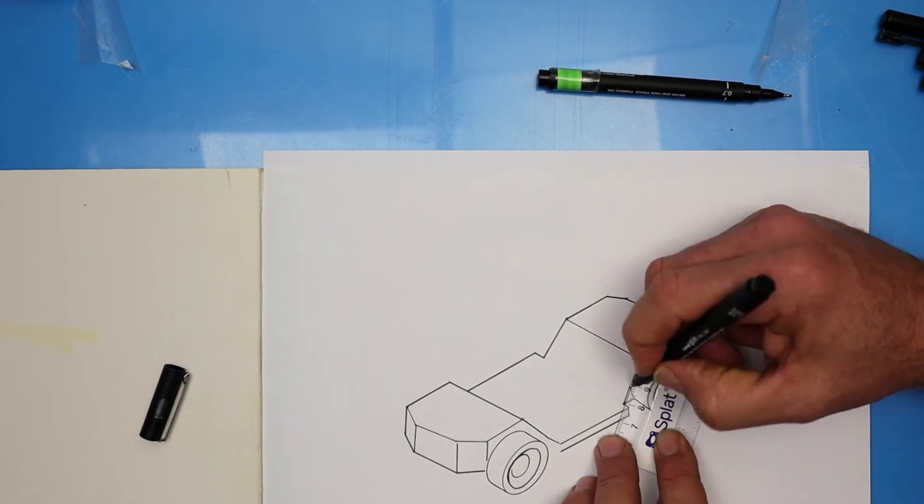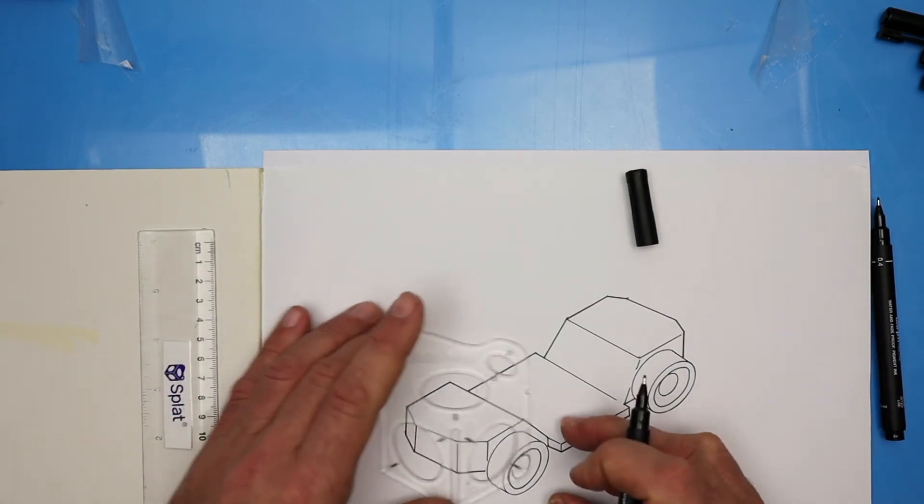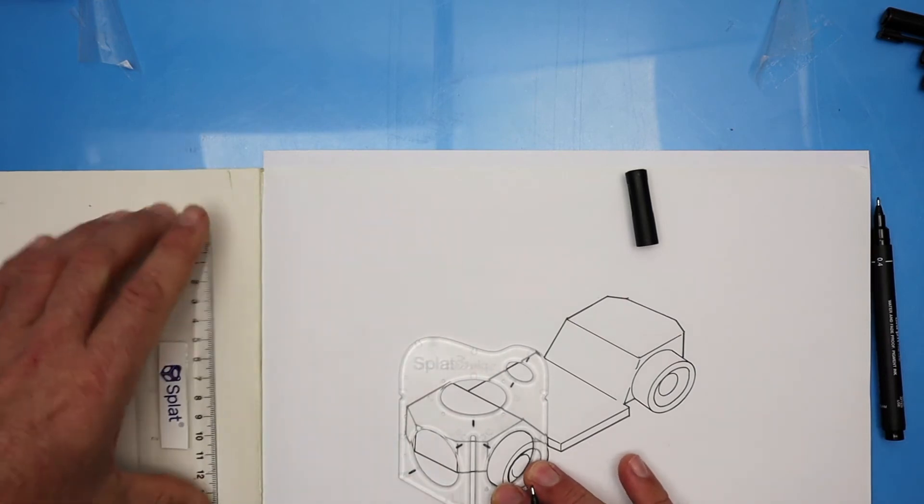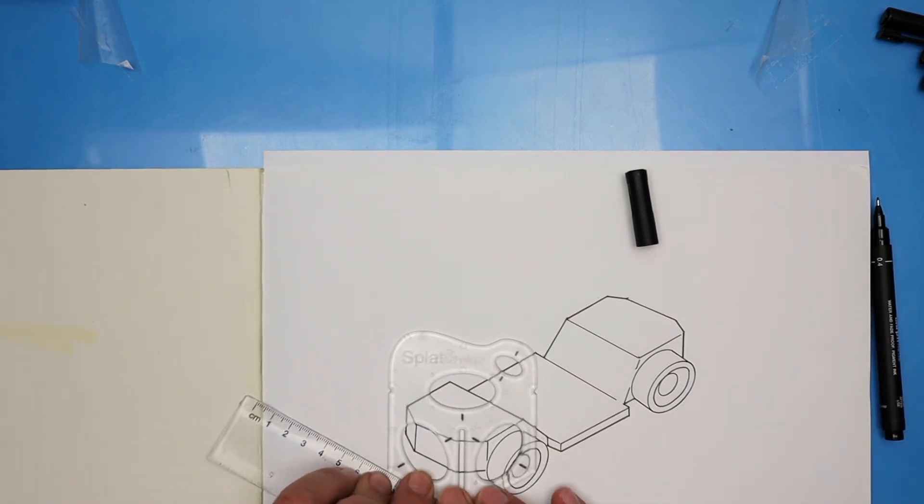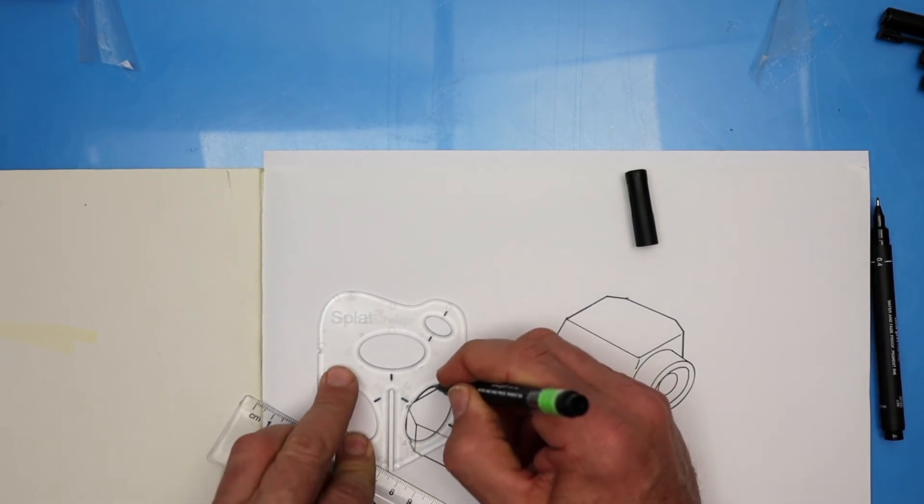Here's an easy way to draw the wheels on the far side. First, we take the splat and we line it up carefully with the front wheel. Then place a ruler along the edge and slide the splat until the ellipse is just over the far side and then draw in.